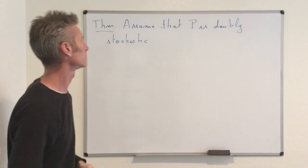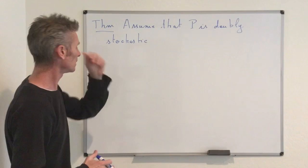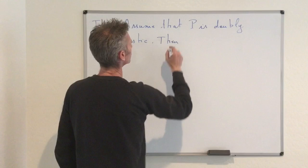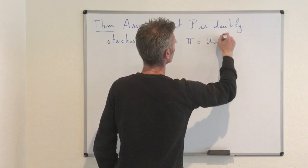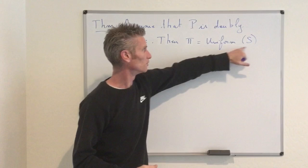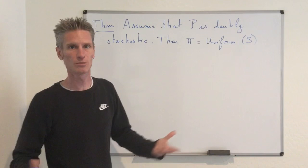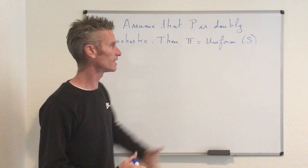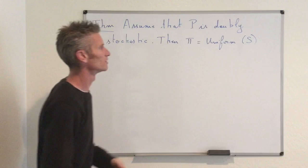If we have this assumption, then we can prove that the distribution pi equal to the uniform distribution on the state space S is stationary. For this result we also need to assume that S is finite, because the uniform distribution can only be defined on a finite set. So we assume S is finite, and it turns out that this specific distribution is stationary.